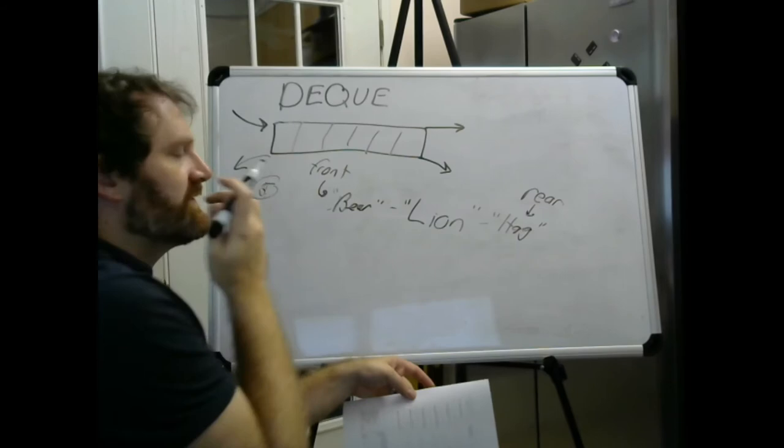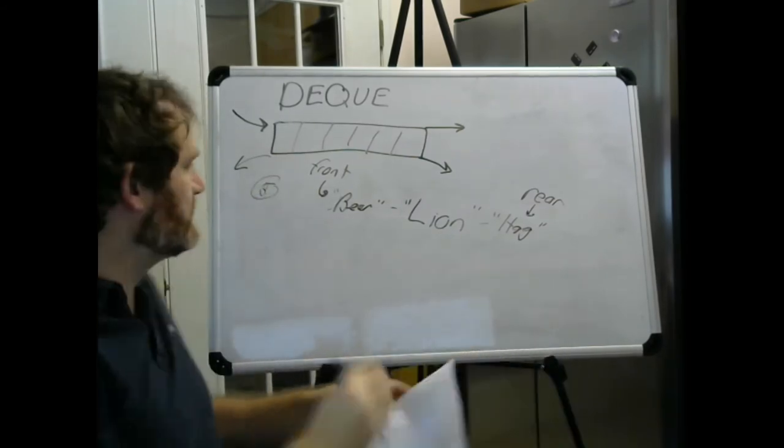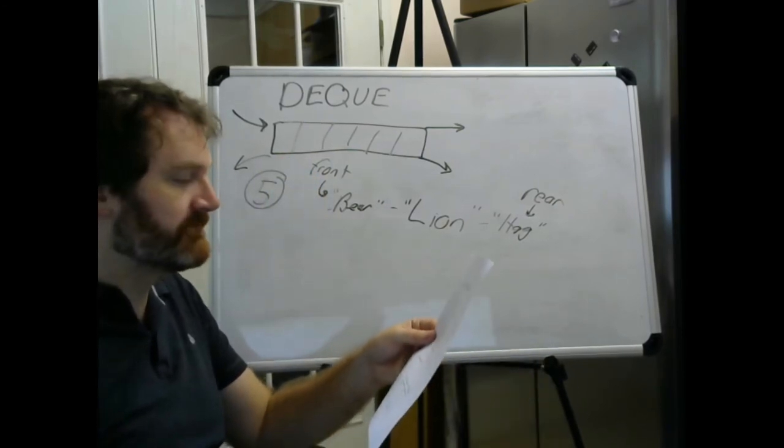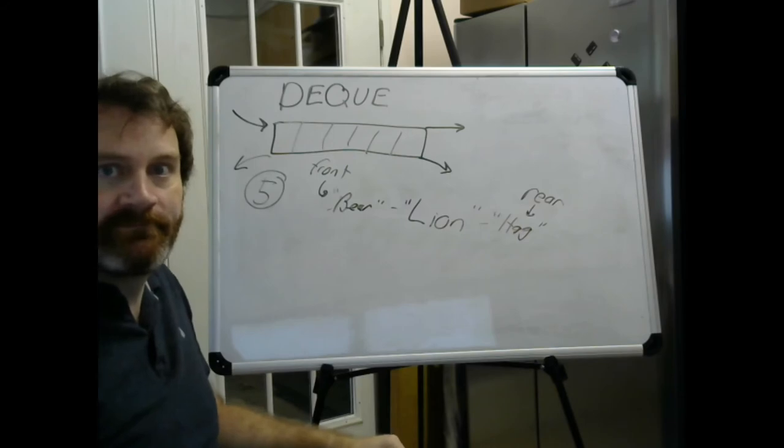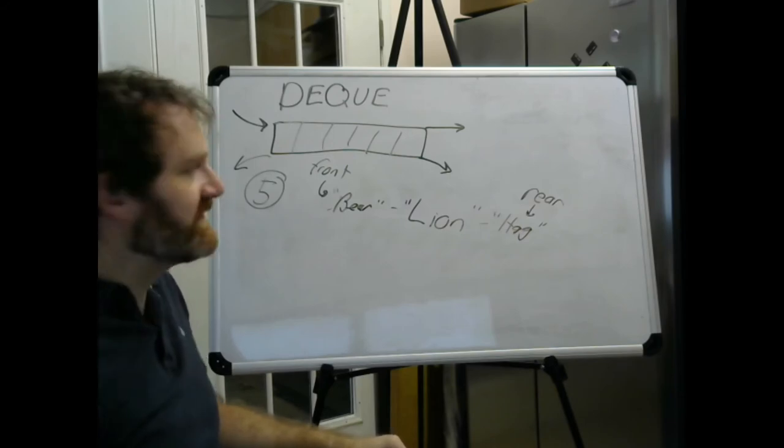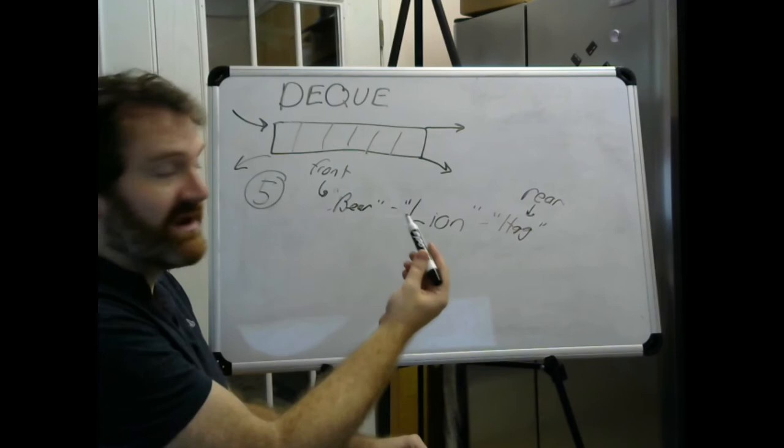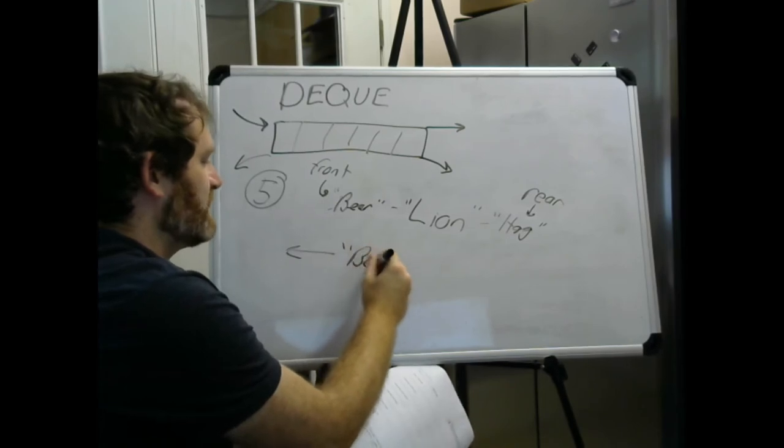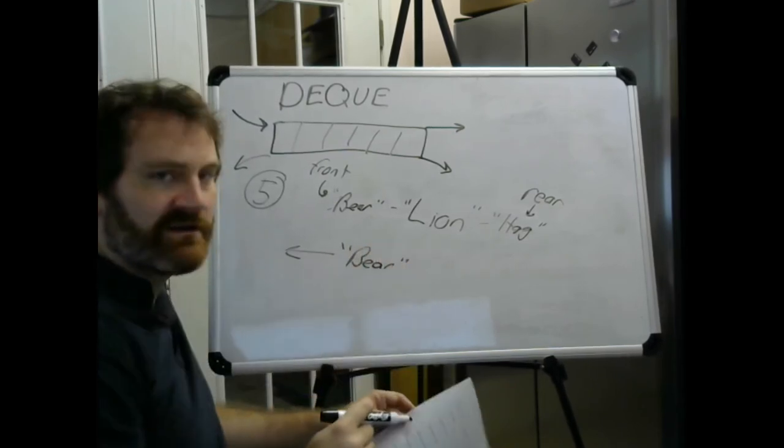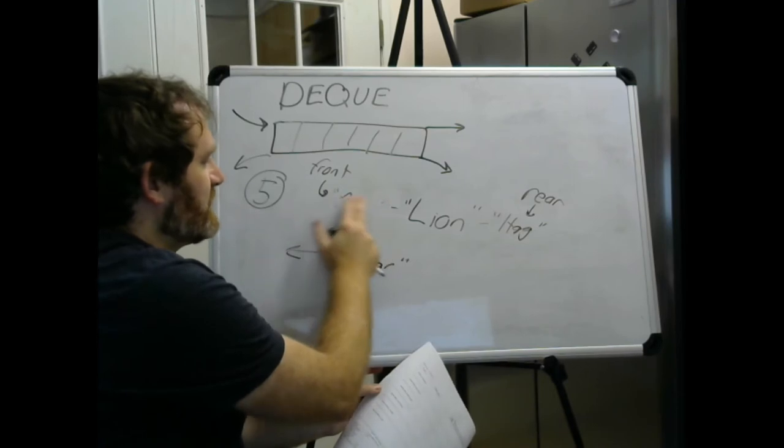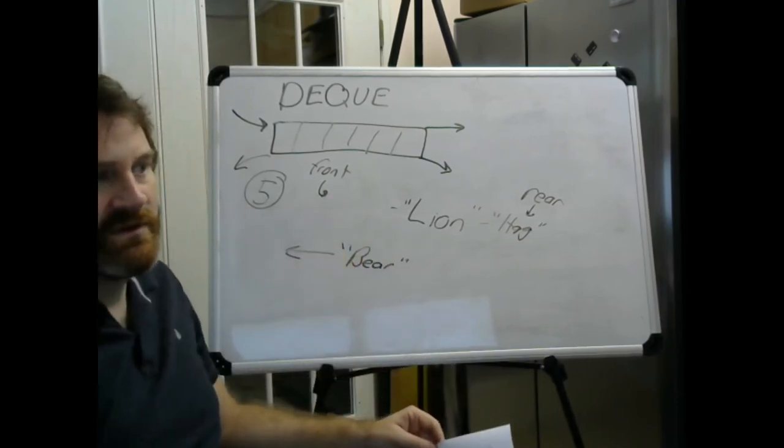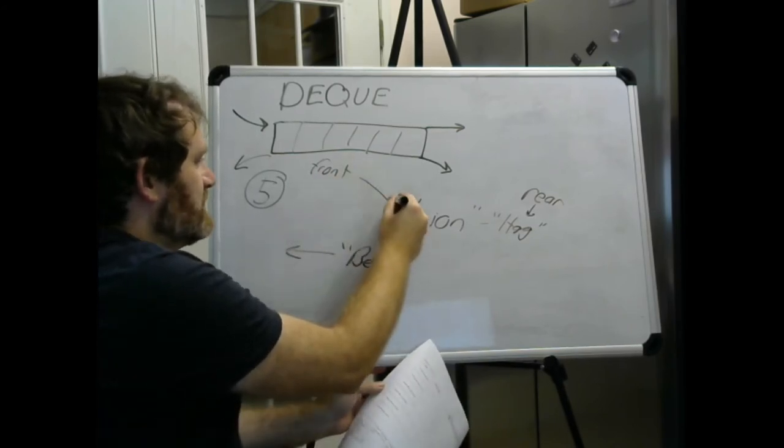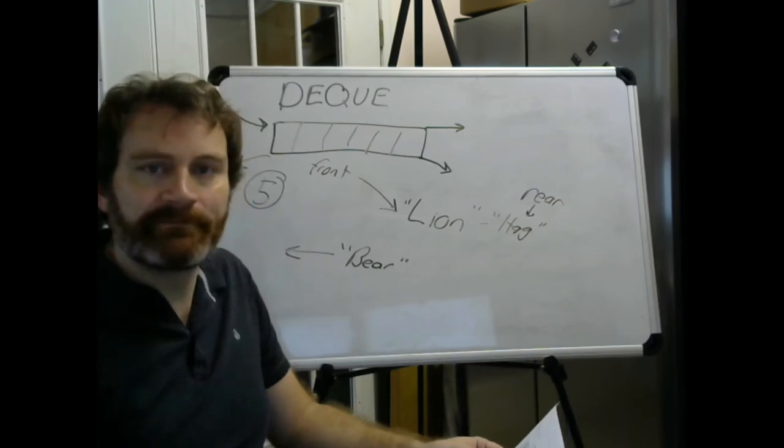Step five, we remove from the front. Who's at the front? Well, conceptually, we've defined the front to be here, so the bear. We are going to remove and return the bear. And when we remove from these data structures, we are usually returning them as well. Remove and return. So the bear goes away. Who is now the front? The front is now the lion.